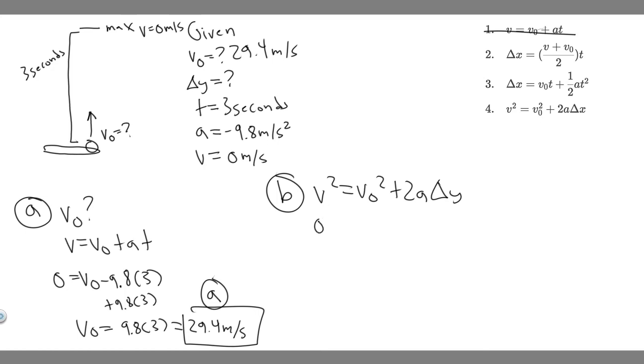So V is 0, so 0 squared is just 0, equals V sub 0 squared, which is 29.4 squared, plus 2 times A, which is minus 9.8, times delta Y. And you know it's negative because A is negative because it's slowing it down, pulling it downwards. So what we want to do is move minus 29.4 squared to the other side. You'll get minus 29.4 squared equals 2 times minus 9.8, which is minus 19.6 times delta Y. So to get delta Y, just divide by minus 19.6.